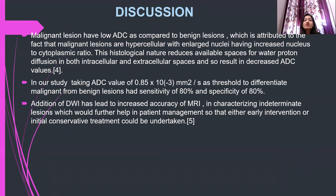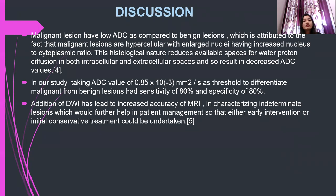This histological nature reduces the available space for water proton diffusion in both intra- and extracellular spaces, which results in decreased ADC values. In our study, taking an ADC value of 0.85 × 10⁻³ mm²/s as the threshold to differentiate malignant from benign lesions gives a sensitivity of 80% and specificity of 80%. Addition of DWI has led to increased accuracy of MRI in characterizing indeterminate lesions, which would further help in patient management, so that either early intervention or initial conservative treatment can be undertaken.